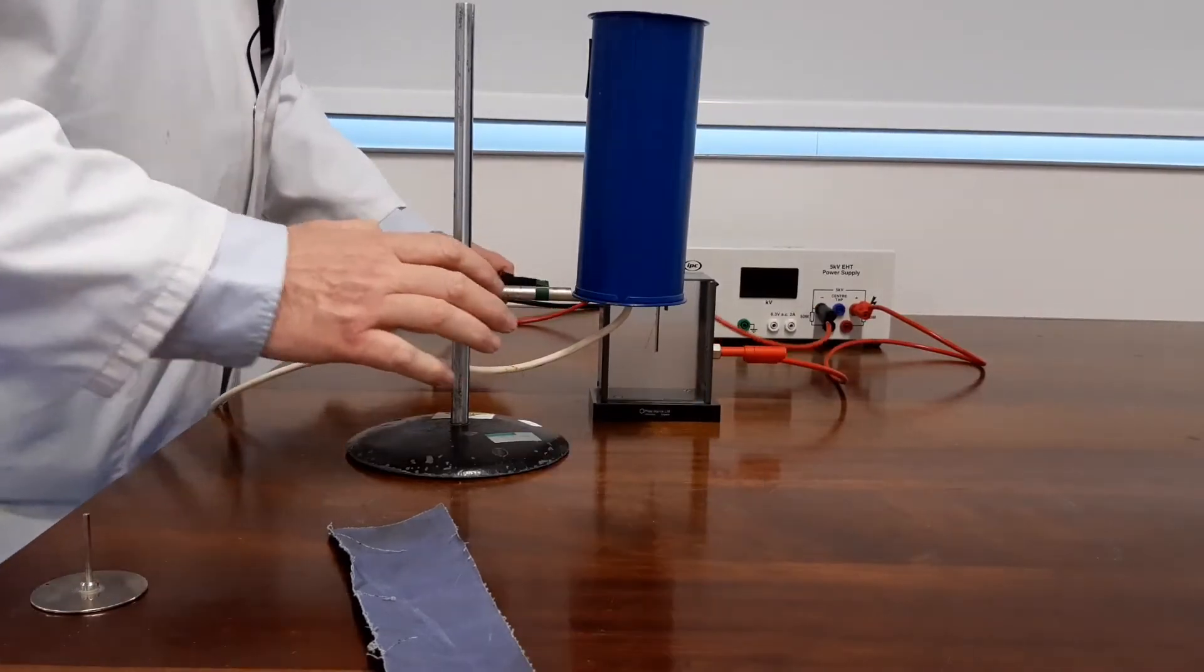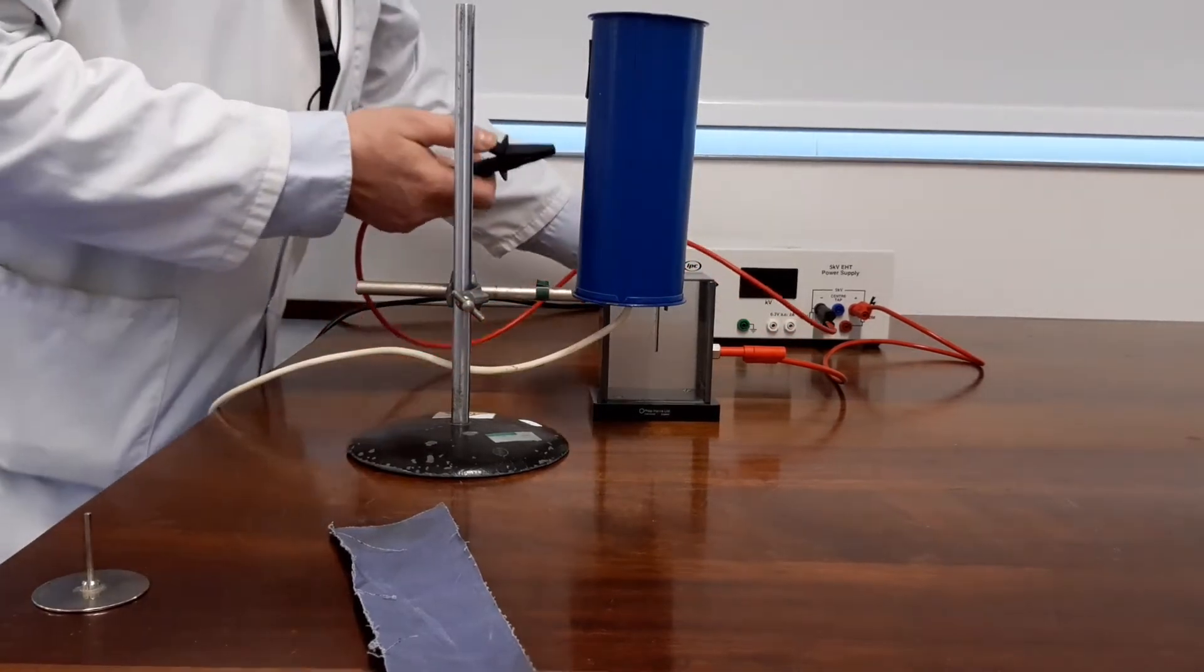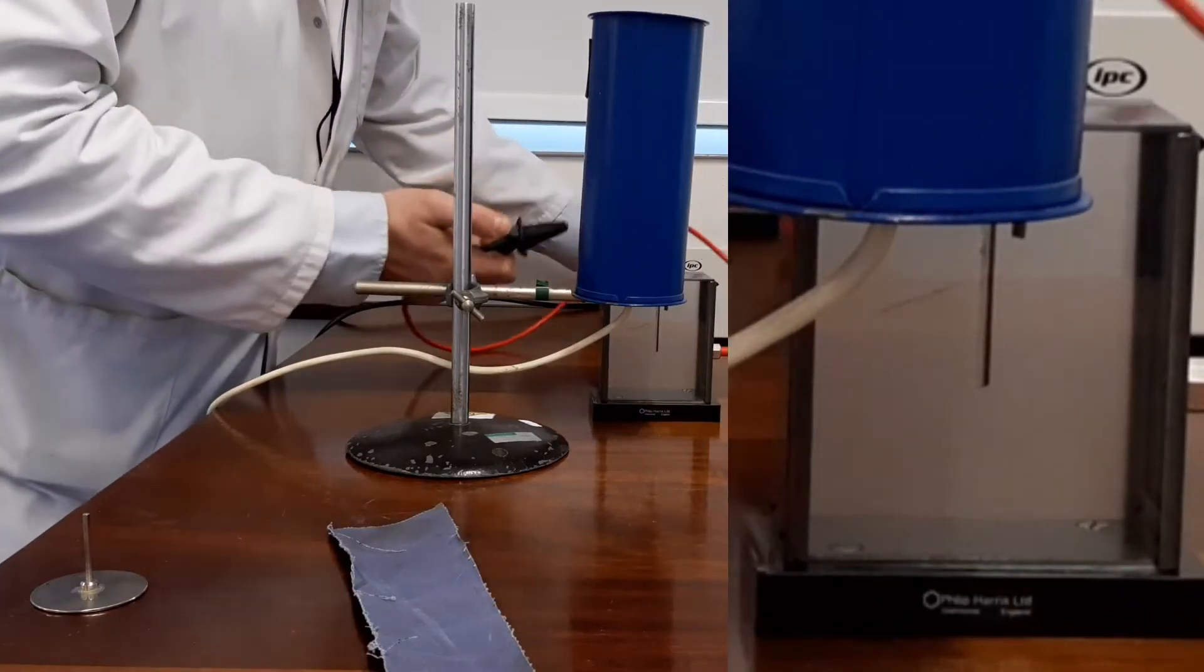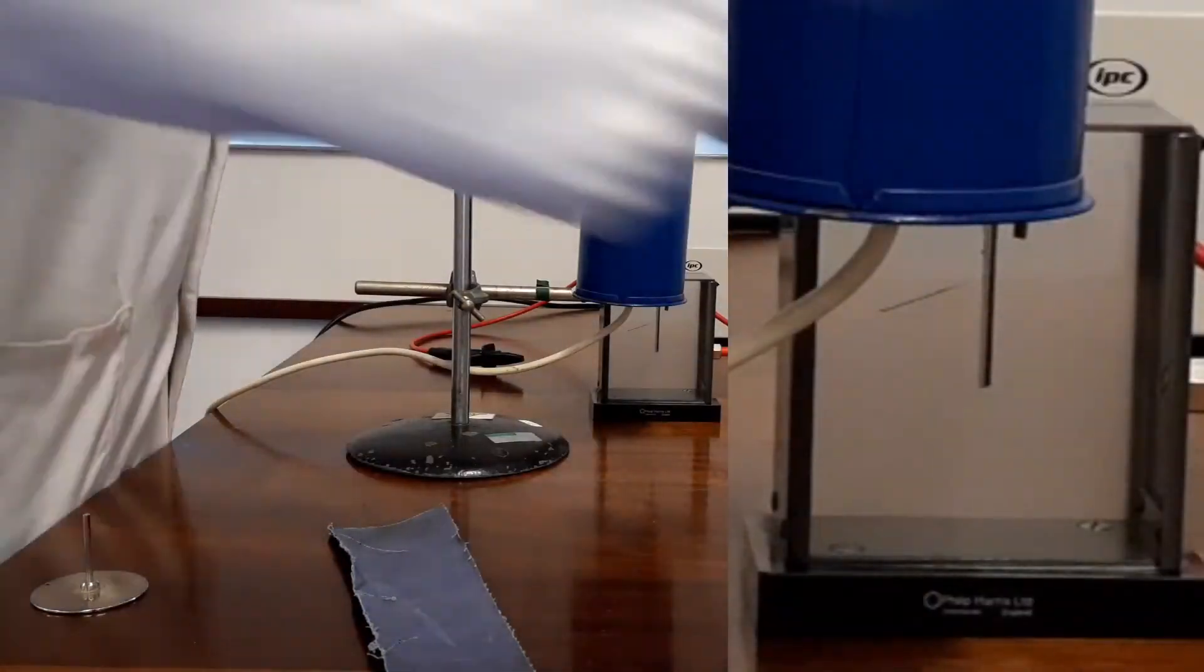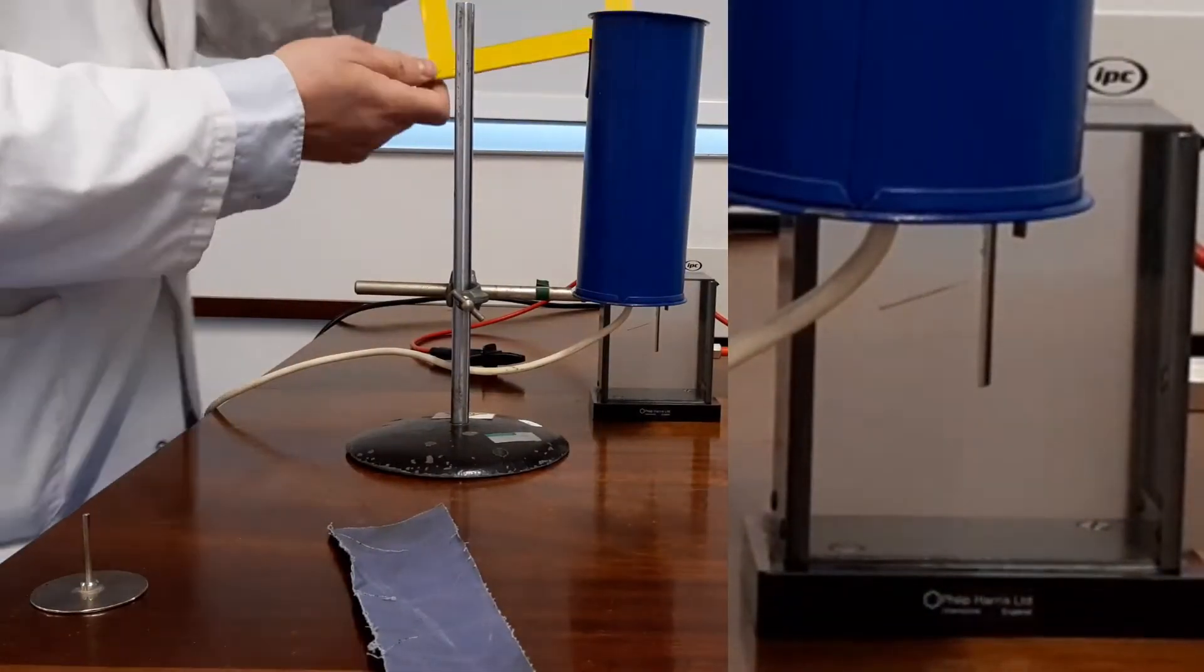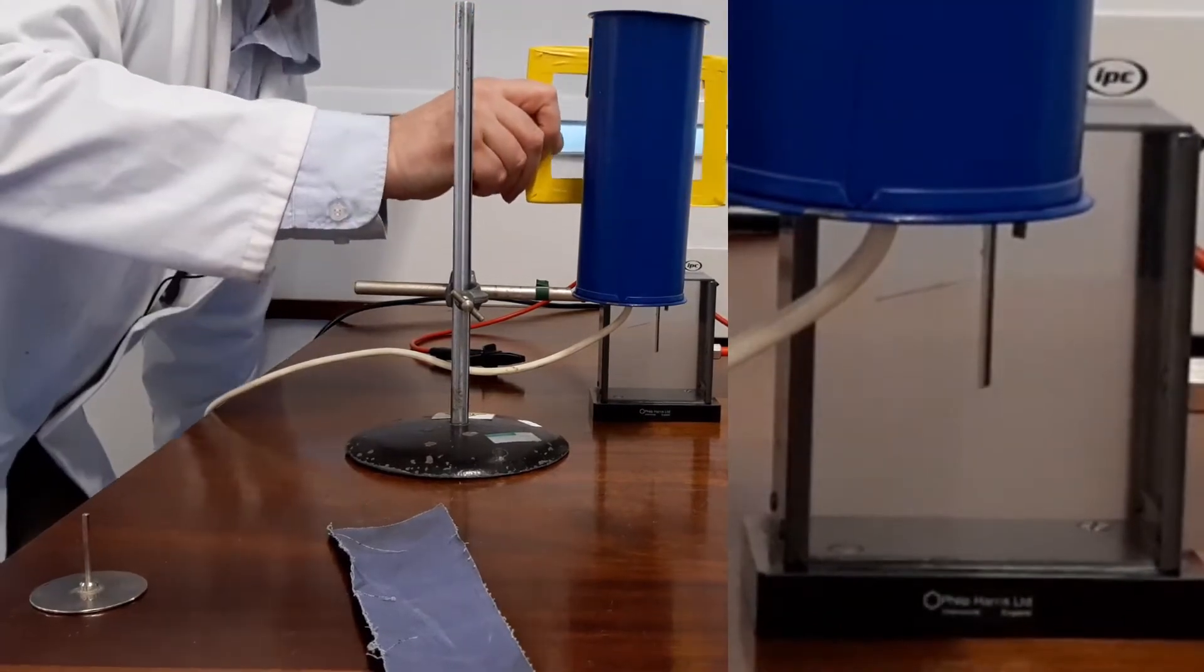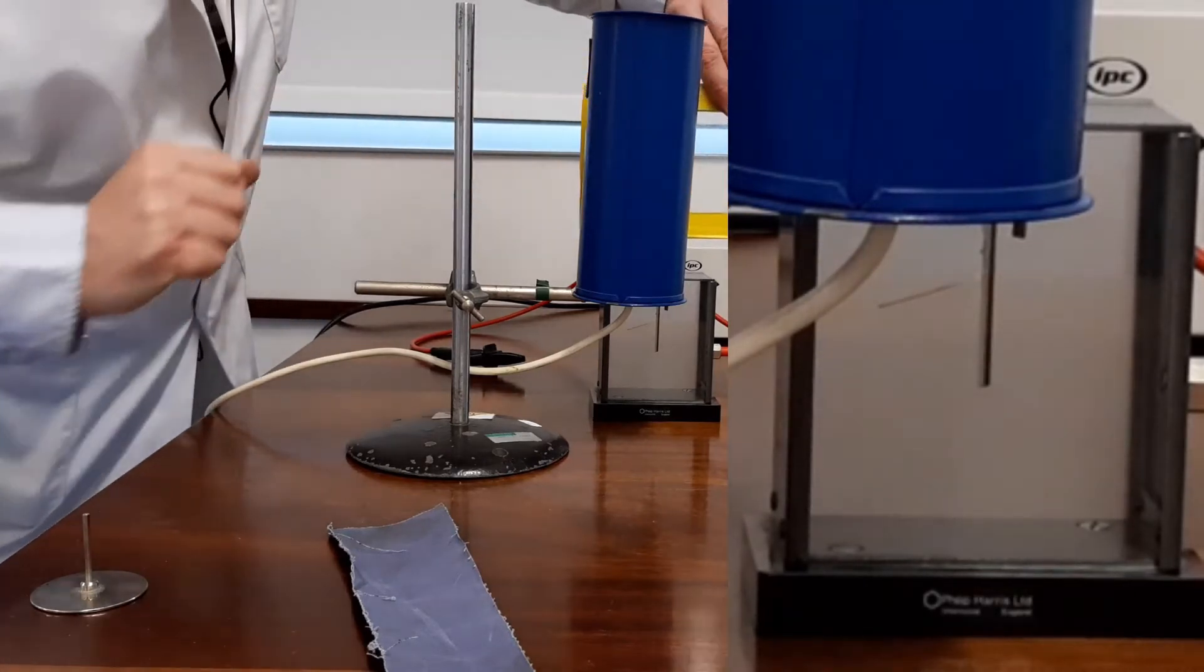The second demonstration you can do with this is to charge it up again. Place a glass plate between the zinc and the electrode, switch on the source.